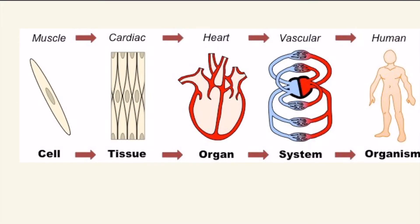For example, in living organisms, we can start with a cell, and then cells make up tissue, and tissues make up organs, organs make up systems, and the system makes up an organism.